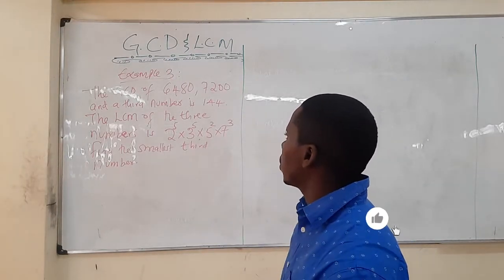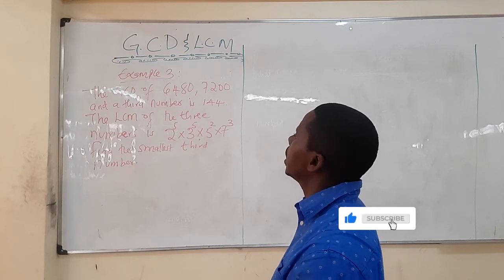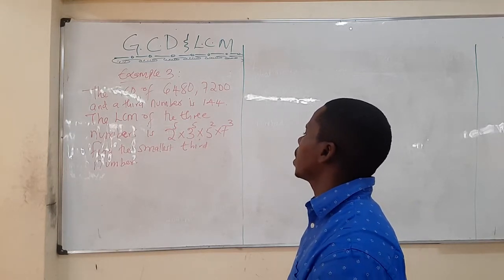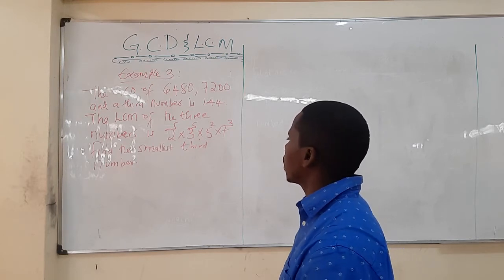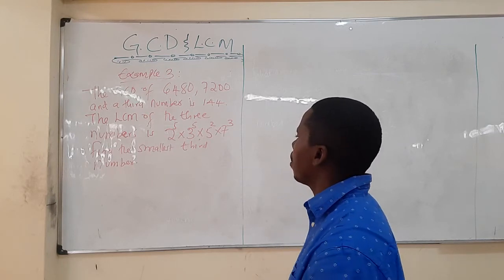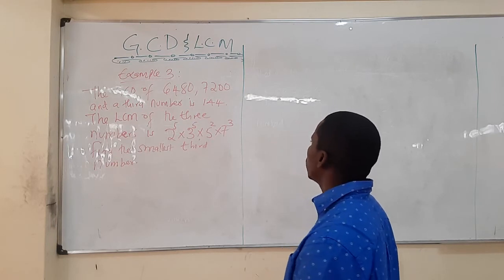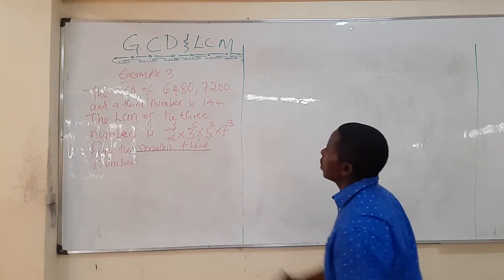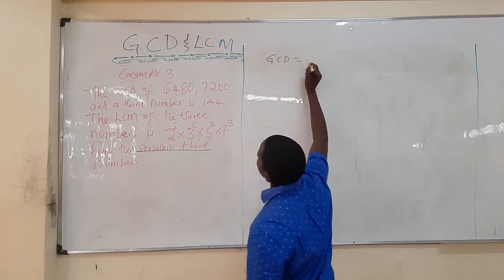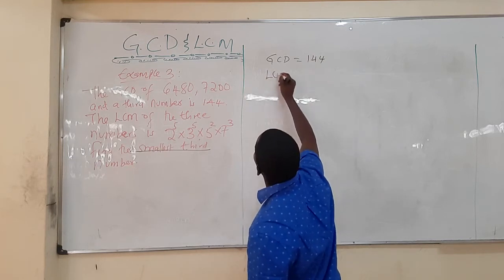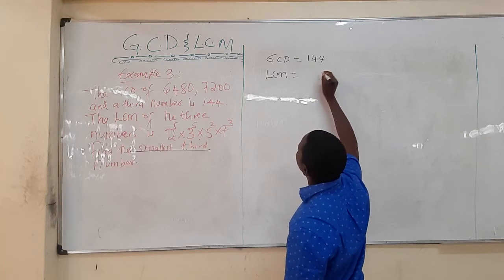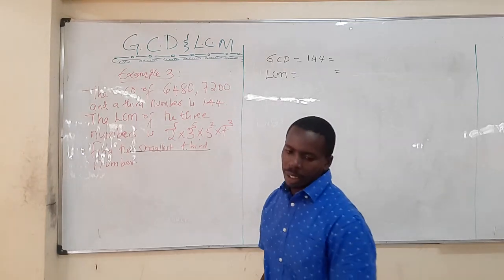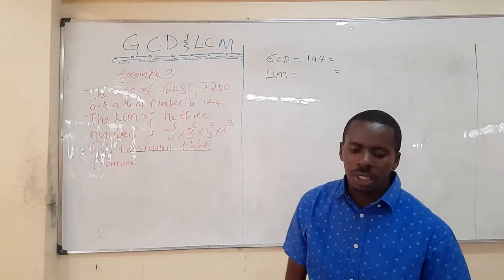Now let's look at Example 3. The GCD of three numbers is 144, the LCM is given as 2⁵ × 3⁵ × 5² × 7³, and two of the numbers are 6480 and 7200. Find the smallest possible third number. We start by writing 144 in prime factor form: 144 = 2⁴ × 3².